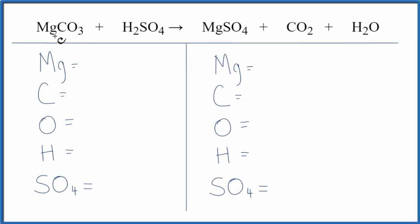In this video, we'll balance the equation MgCO3 plus H2SO4. That's magnesium carbonate plus sulfuric acid. Let's add the atoms up on each side.